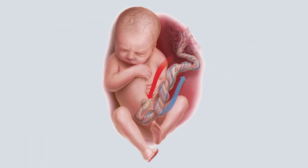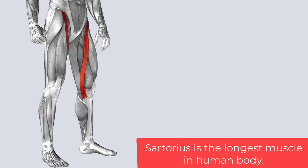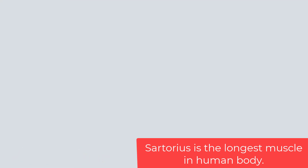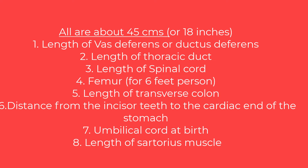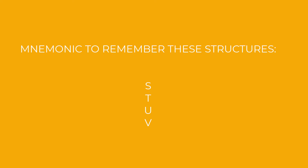The umbilical cord, which connects the fetus to the mother via the placenta, is also 45 centimeters in length. As a GK fact, sartorius is the longest muscle in the human body, also measuring 45 centimeters. To summarize, the 45-centimeter structures are: vas deferens, thoracic duct, spinal cord, femur (for a six-feet person), transverse colon, distance from incisor to cardiac end of stomach, umbilical cord, and sartorius muscle.